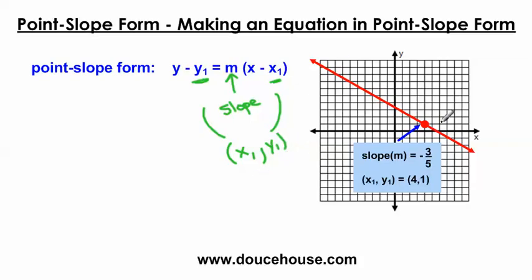For example, if I look at this line right here, this line has a slope of negative 3 over 5. And then I'm just choosing a random point on that line. In this case I did 4, 1. And so I would plug these numbers into this equation.